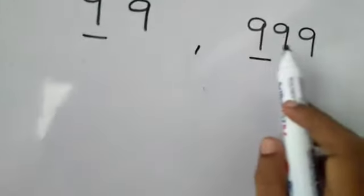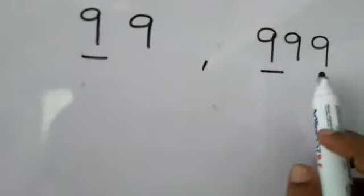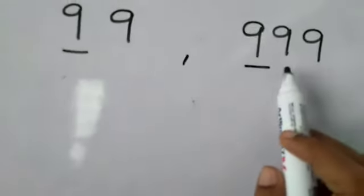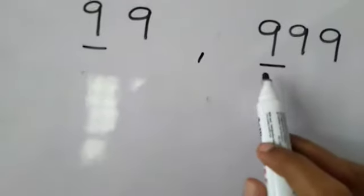Next, 999. It has 3 digit number. So it is 1s, 10s, 100s.